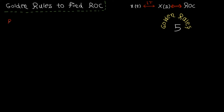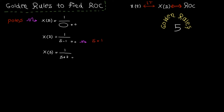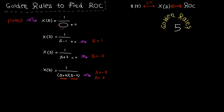Before we start, let me clarify the concept of poles. Poles are the points that make the denominator of the Laplace transform equal to zero. For example, the pole is where s minus one equals zero, giving a pole at one. In another example, the pole is at minus two. When the denominator is a product of two terms, each term gives a pole — so we have poles at minus three and at two.